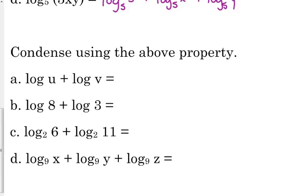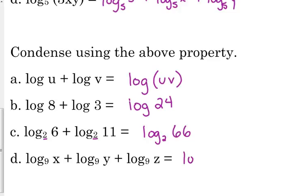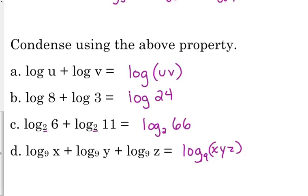Being able to say, okay, if I'm adding two logs, well, then that means I've just got the log of the product. The log of u plus the log of v is the log of u times v. The log of 8 plus the log of 3, that's equal to the log of 24. 8 times 3. Log base 2 of 6 plus log base 2 of 11. They must have the same base. They do have to have the same base in order to be able to put them together. So that's equal to the log base 2 of 66. And the log base 9 of x plus the log base 9 of y plus log base 9 of z. We can put all those together into a single log, and we're multiplying those three together. x, y, z, and I suggest putting parentheses.